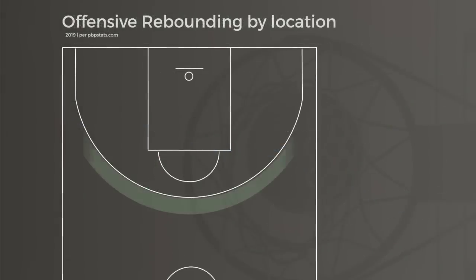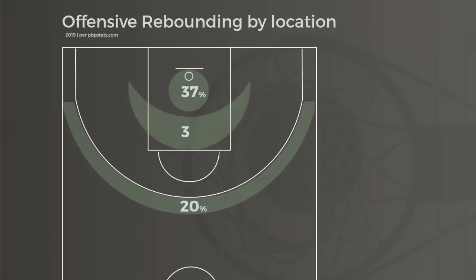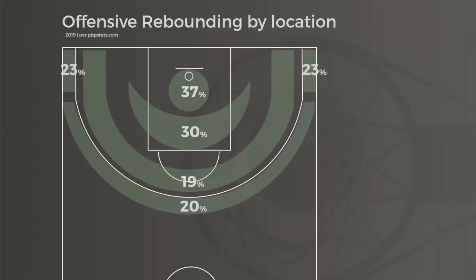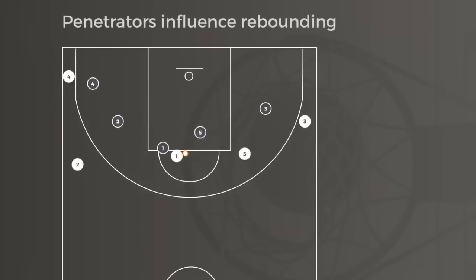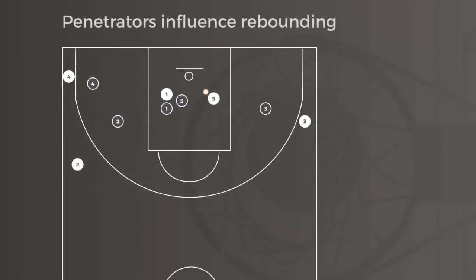As a result, three-point shots are far less likely to be rebounded by the offense than twos, because shots closer to the basket have higher offensive rebounding rates in general than longer twos and threes. This makes sense given that the shooter is closer, so there's another rebounder near the hoop, and penetration can draw defensive attention and help open put-back chances for nearby teammates.